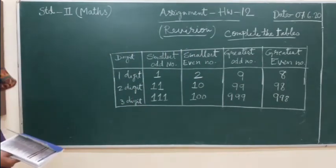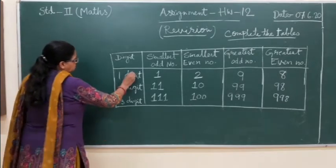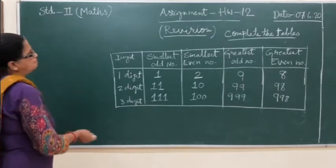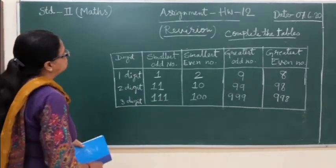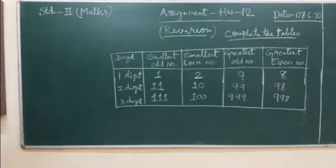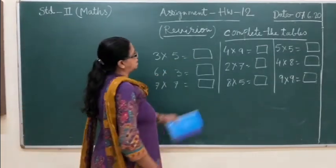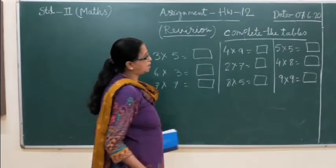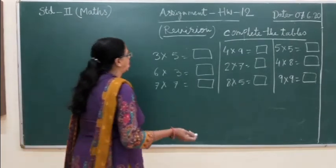So if you have done it correctly, then it's okay, and if you have done any mistakes, do corrections. Let's move to the next question. This is also a revision question. Complete the tables - we need to find out multiplication tables of each number.